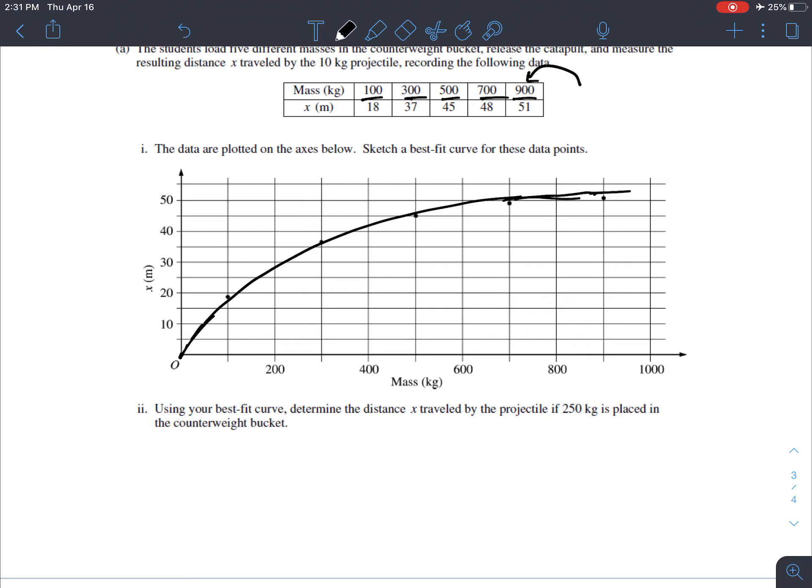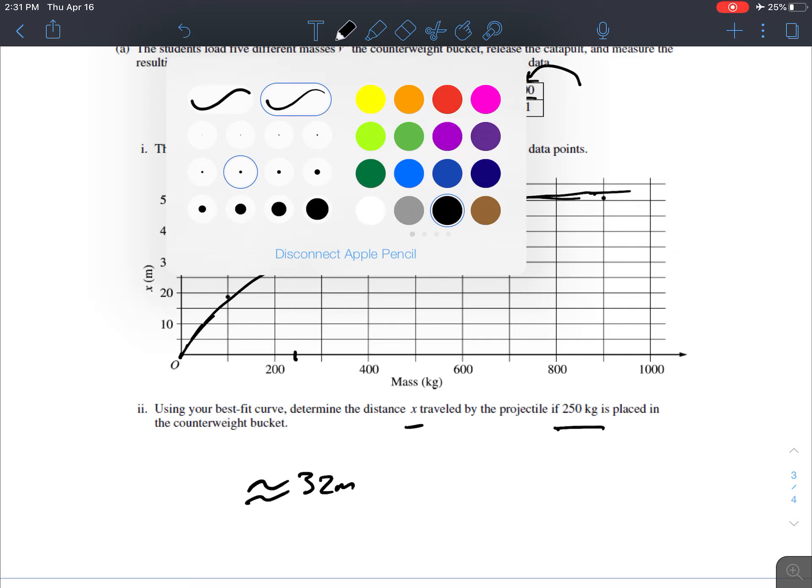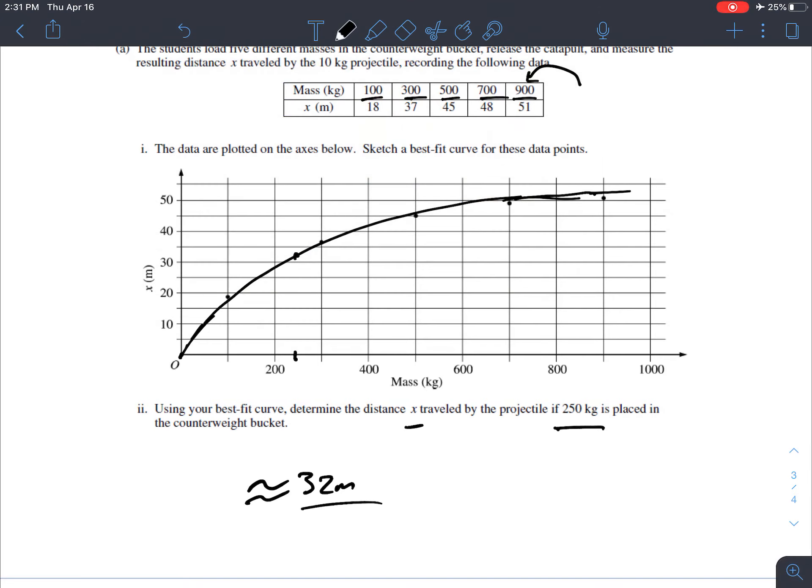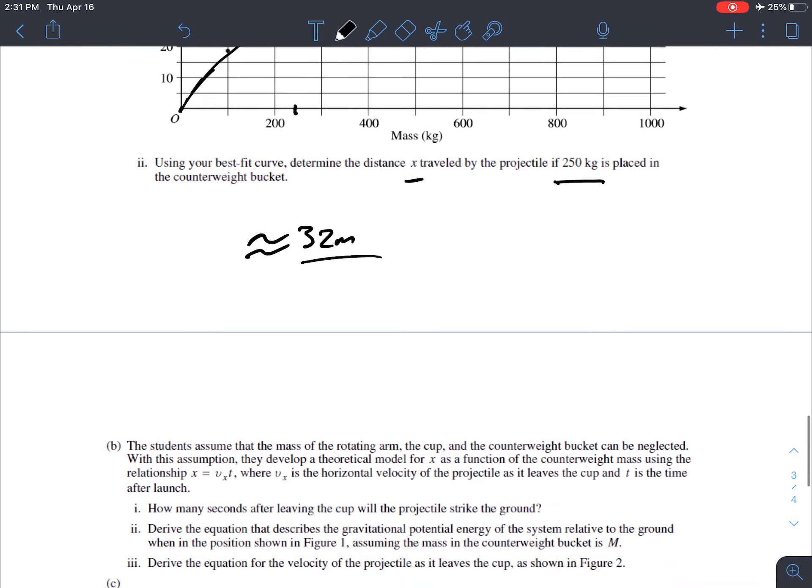And maybe the other point I'm thinking of was the point for this. So what's the distance x traveled if you put 250? Let's see, there'd be 300, so 250 would be here. So that'd be, let's read that out of the graph, I don't know, 32, 33, something like that.